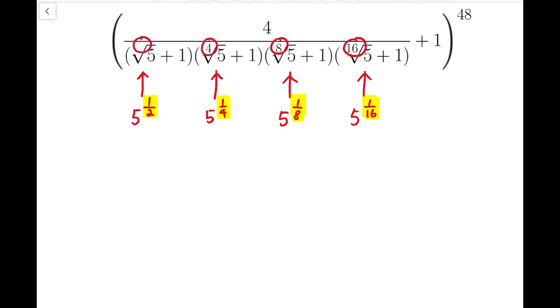2 to the power 1 is 2, 2 squared is 4, 2 cubed is 8, and 2 to the power 4 is 16. So in fact, starting from 5 to the power 1 over 16, if it's squared, then it's 5 to the power 1 over 8.